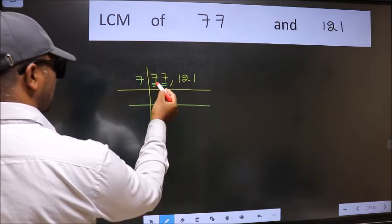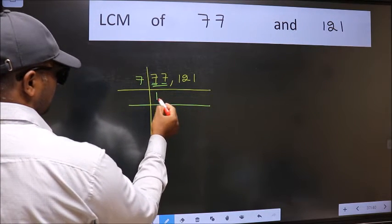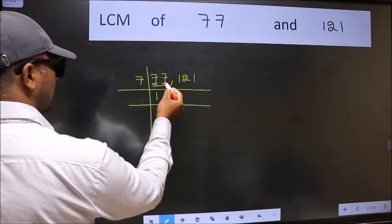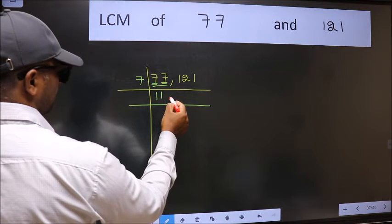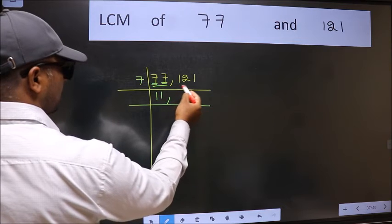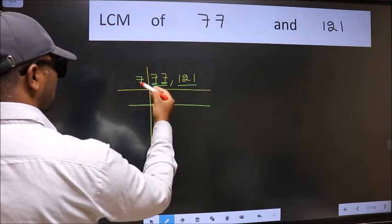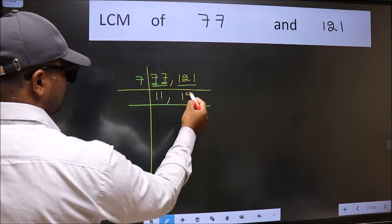First number 7, when do we get 7 in 7 table? 7 times 1 is 7. The other number 7, 7 times 1 is 7. The other number 121, not divisible by 7. So you write it down as it is.